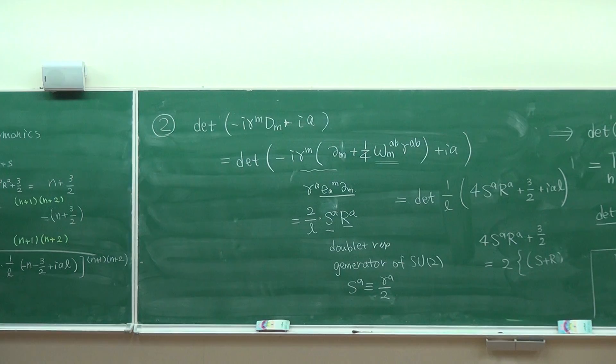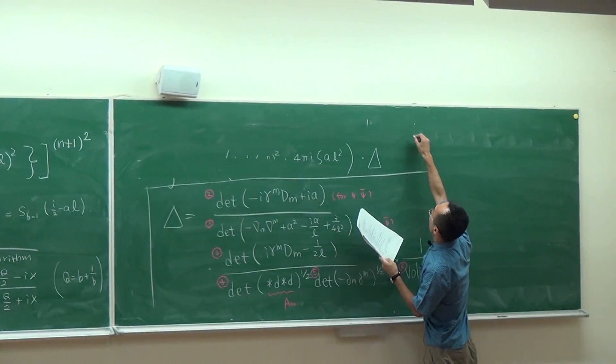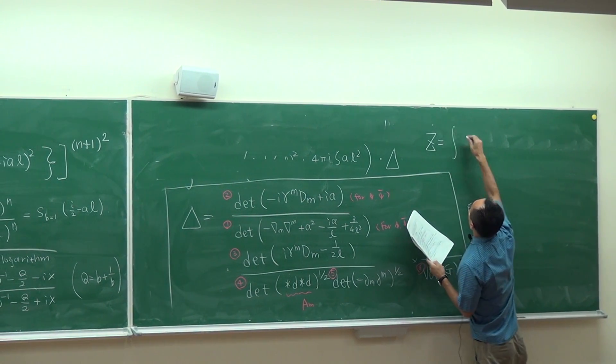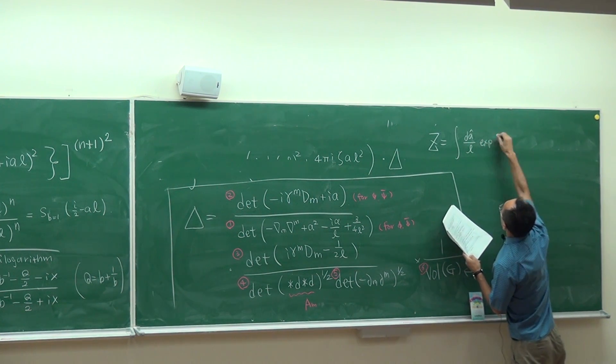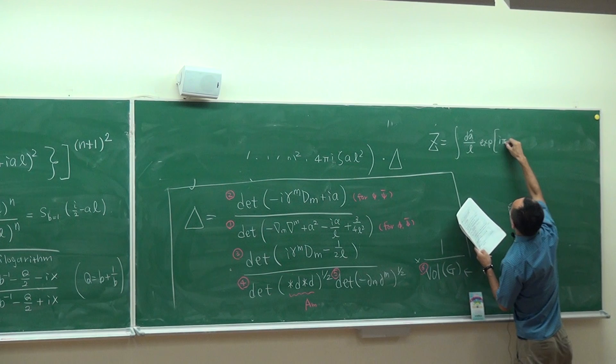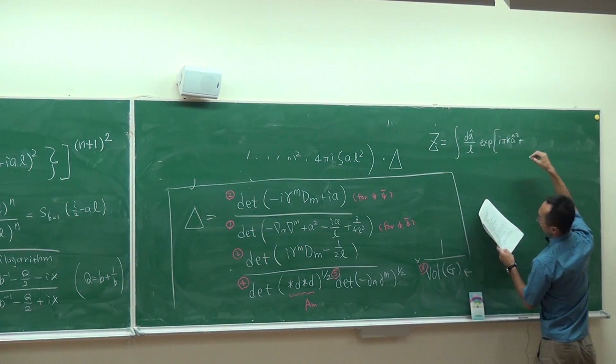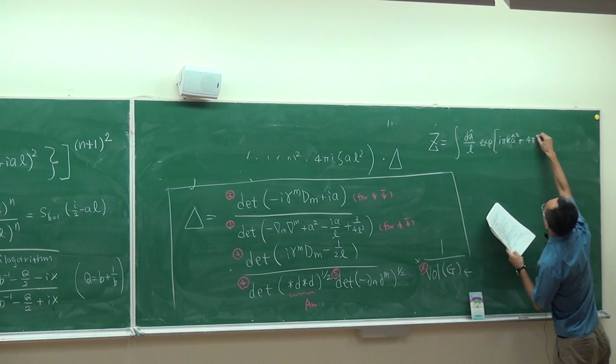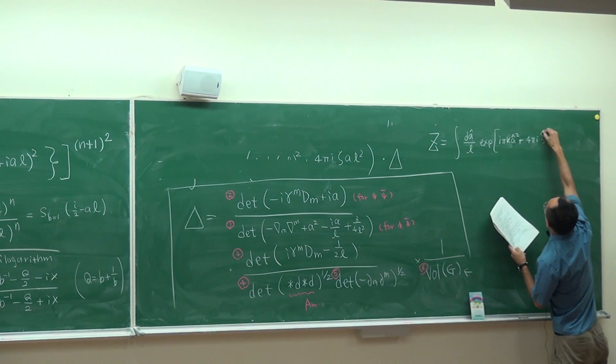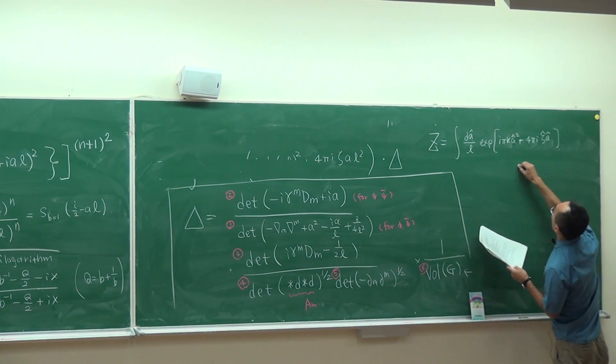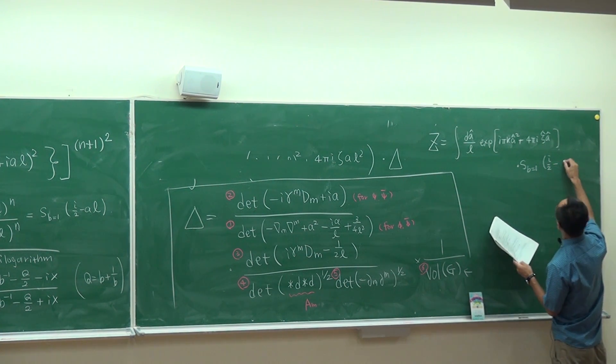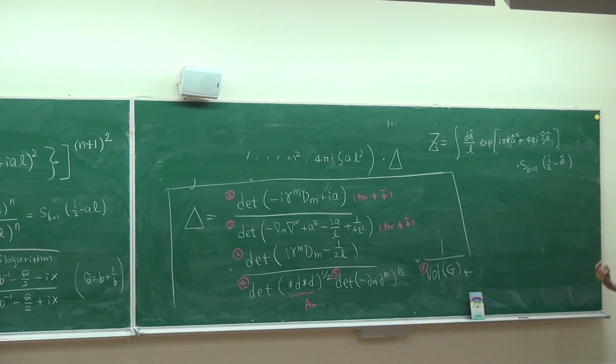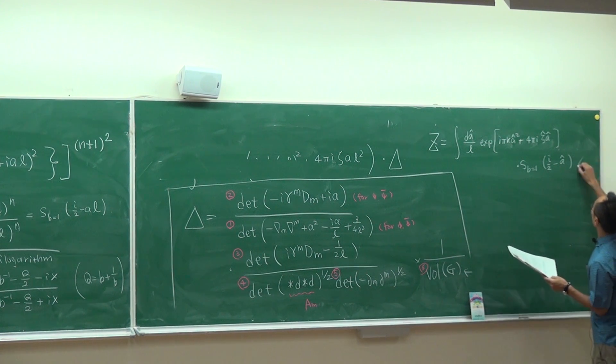Let me summarize what we have been doing. The partition function is this. Or, putting it all together, the partition function of super Yang-Mills on a round sphere has basically this expression.